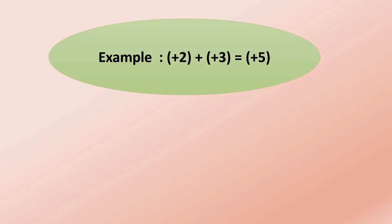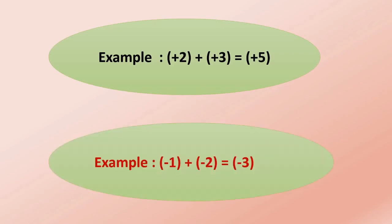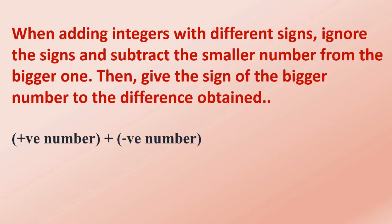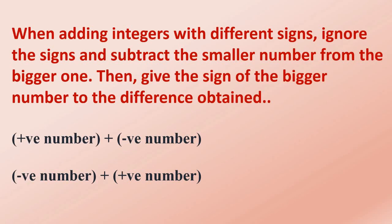For example: positive 2 plus positive 3 gives positive 5; negative 1 plus negative 2 gives negative 3. When adding integers with different signs, ignore the sign and subtract the smaller number from the bigger one, then give the sign of the bigger number to the difference obtained.